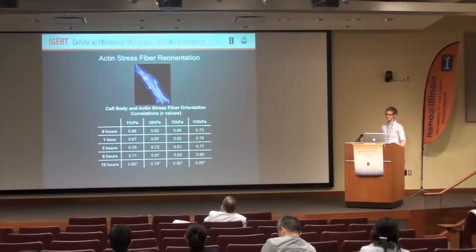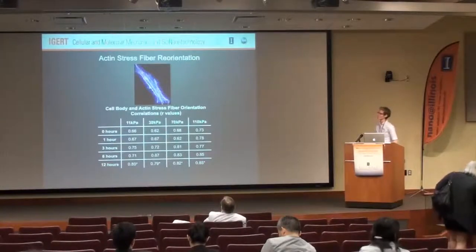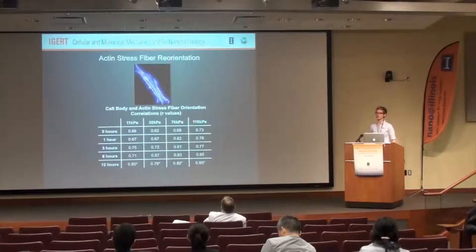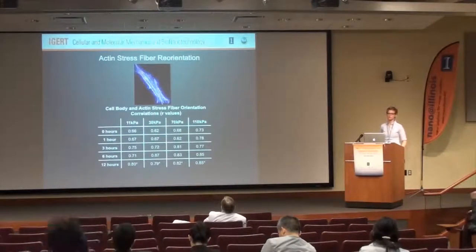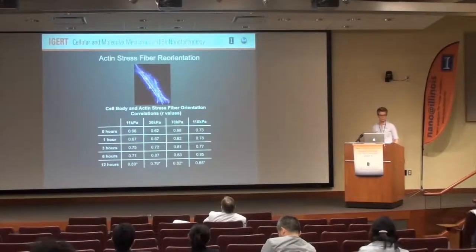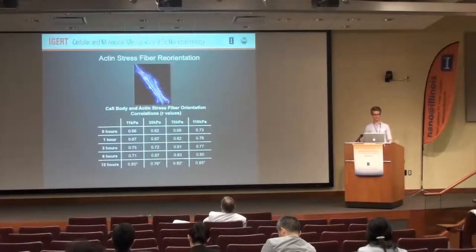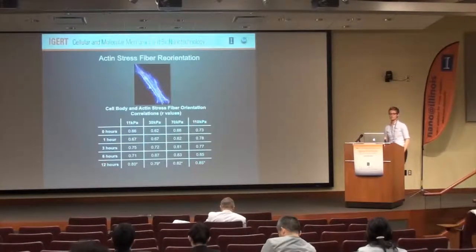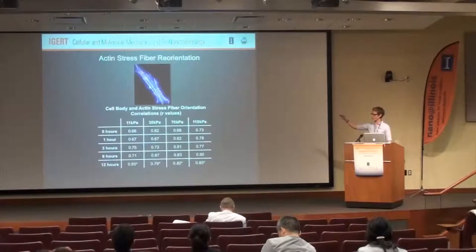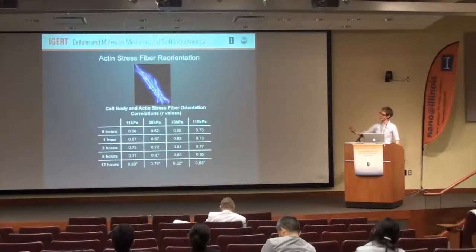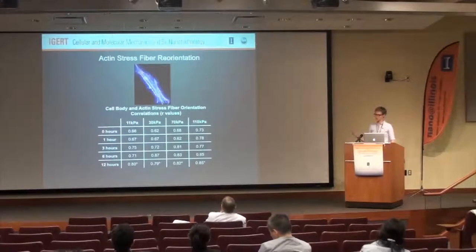The next data point is the actin stress fiber orientation. I used an ImageJ macro with a fast Fourier transform to identify where those actin stress fibers were and obtain a mean orientation of the internal structures within the cell. I then correlated that number with the orientation of the whole cell, to see if the internal structures are driving the response because they are what's sensing the strain. On all substrates over time, those R-values increase going from 0 to 12 hours, and from 11 to 110 kPa the correlation also strengthens.